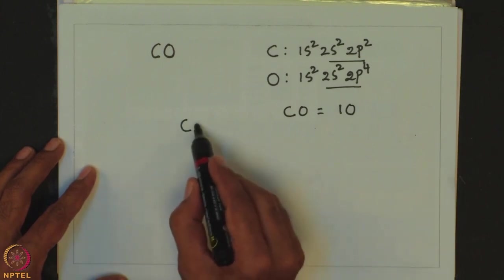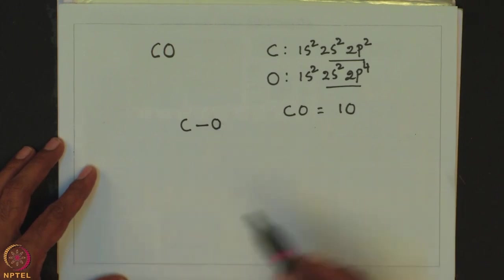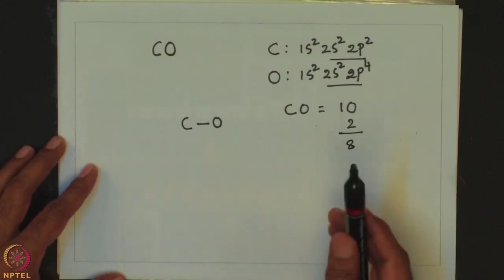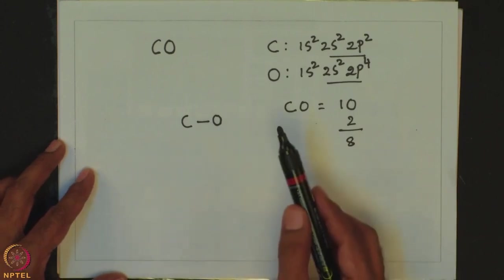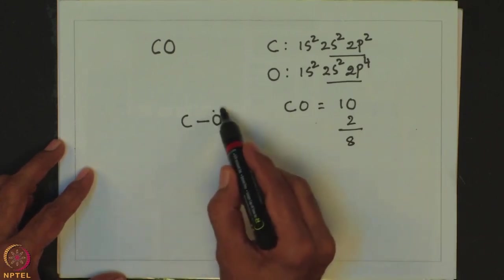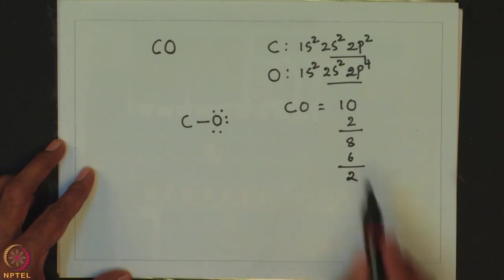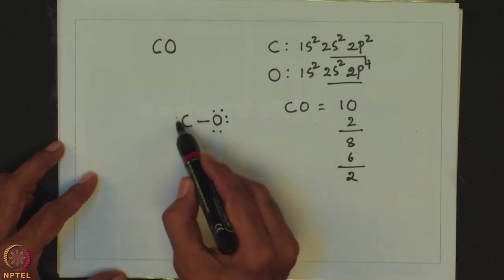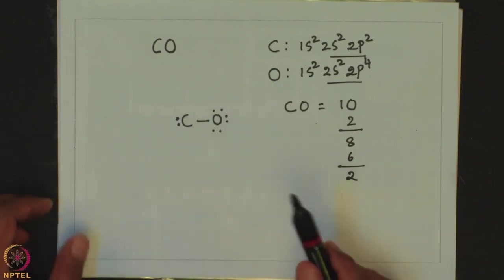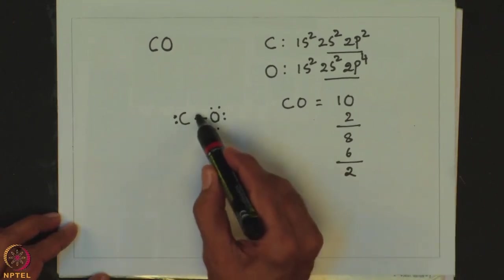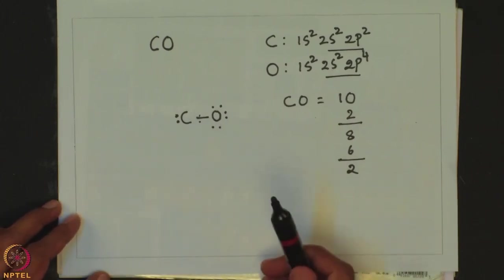First write a bond using 2 electrons, leaving 8 electrons remaining. Using these 8 electrons, let us first try to satisfy the octet of oxygen. Oxygen already has 2 electrons and requires 6 more, so 6 electrons are placed on oxygen, leaving 2 electrons which go to carbon. Now in carbon monoxide, oxygen has satisfied its octet with 6 plus 2 = 8 electrons, whereas carbon has only 4 electrons. Lewis structure alone does not give a satisfactory octet for carbon.